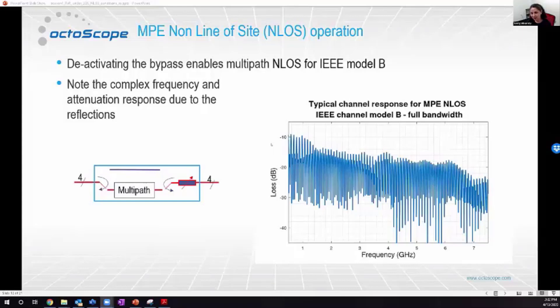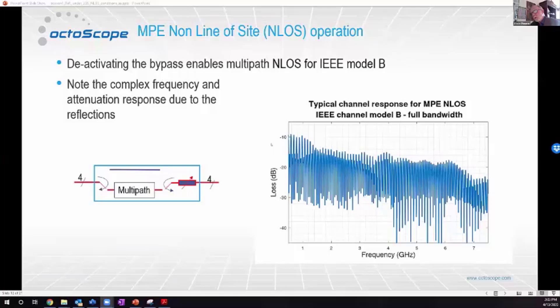Lincoln asks: most channel models would not vary in time unless the receiver/transmitter is moving. Correct — or the reflectors could move too. When we rotate on a turntable, we can control that as well. Is the channel model symmetrical for subcarriers within the OFDMA bandwidth? The channel model in terms of delay profile is symmetrical, therefore it is symmetrical in terms of uplink and downlink, yes.